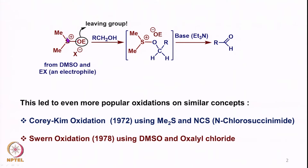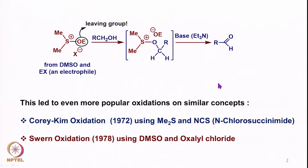The alcohol reacts with the sulfur, the leaving group departs, and upon reaction with triethylamine as a base, the corresponding aldehyde is formed. As confirmed by the Torsal studies, the hydrogen from the methyl group is first removed as a proton to generate an anion, which then intramolecularly picks up this hydrogen and oxidation takes place. These studies have led to even more popular oxidations on similar concepts, which we will discuss today.